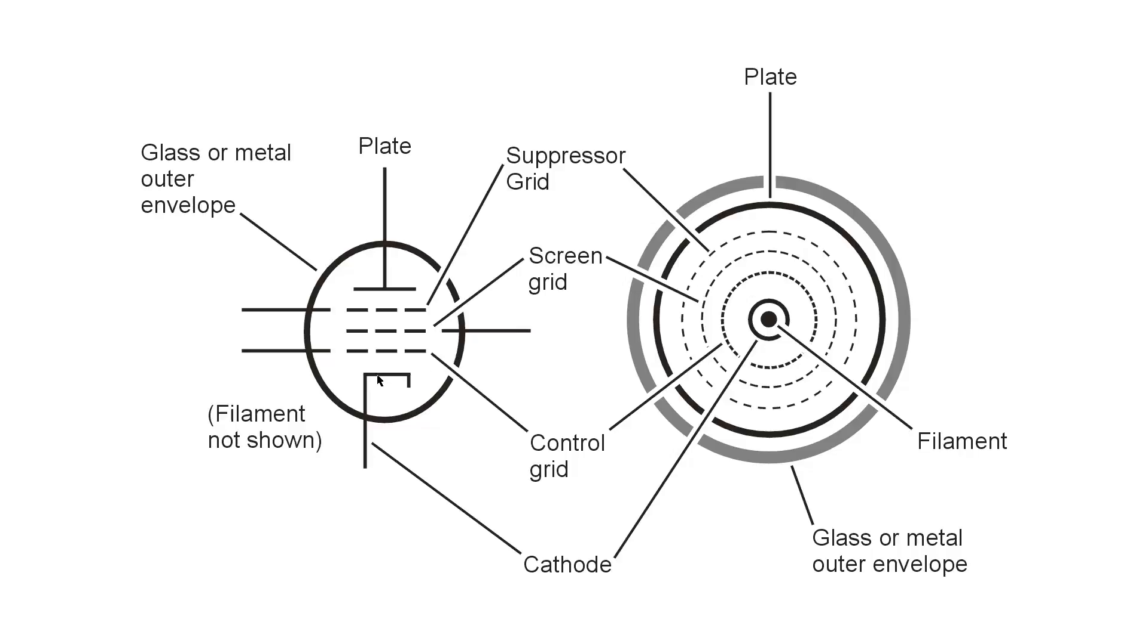Five elements: the cathode, the control grid, the screen grid, the suppressor grid, and the plate. You will find a discussion, a brief discussion of vacuum tubes and the electrodes therein.